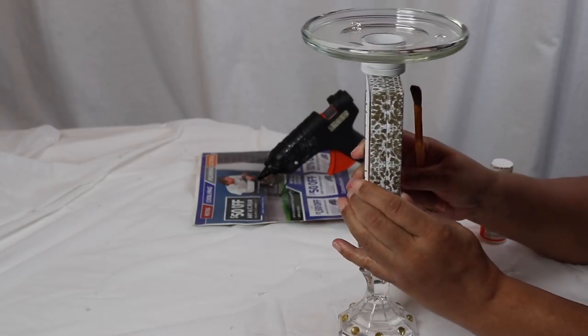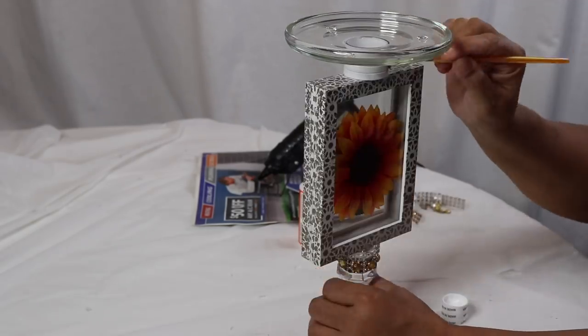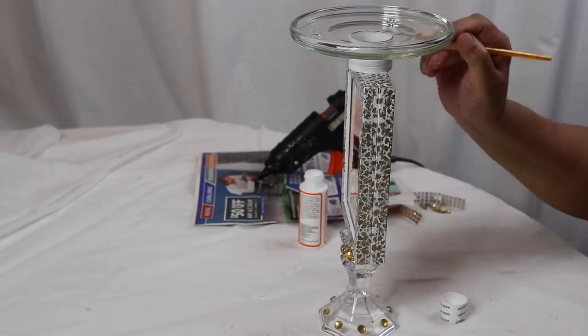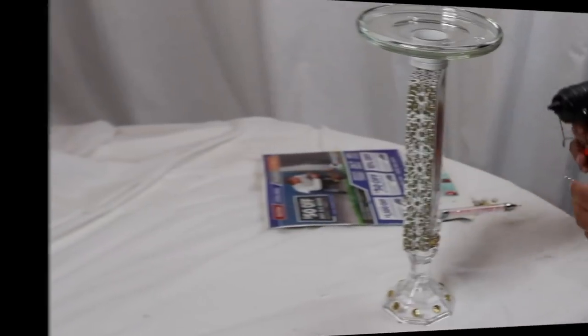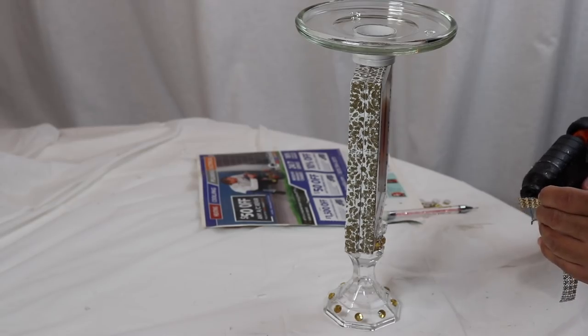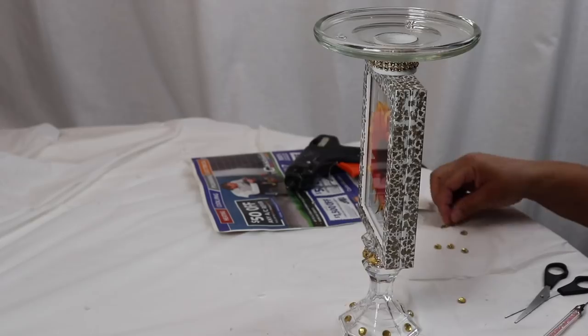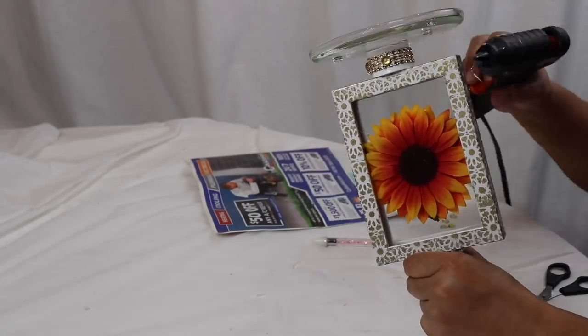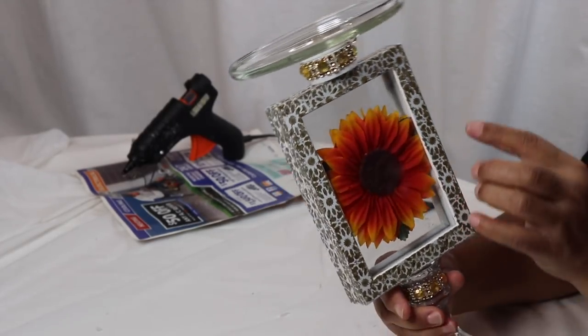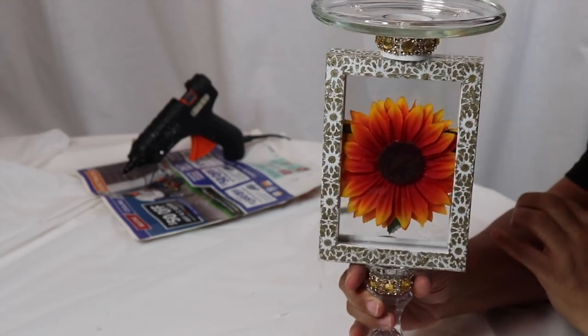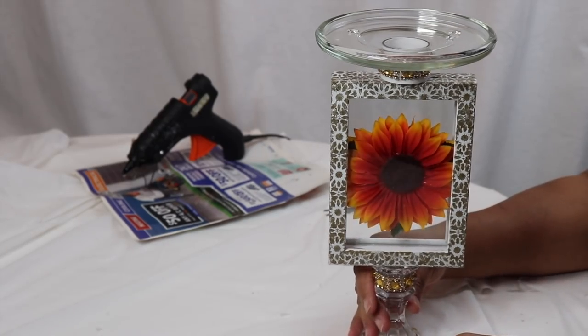Next step is to add Mod Podge to the neck of the candle holder and the design as well. Once the Mod Podge dries, add your bling and your gold rhinestones. And when it all comes together, you have this beautiful fall inspired candle holder. So I'm going to take these along with the first set that I made, put them on display, and let you see what they look like.